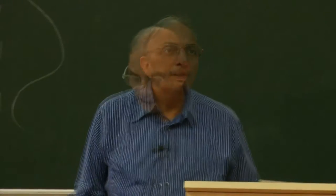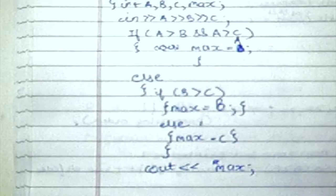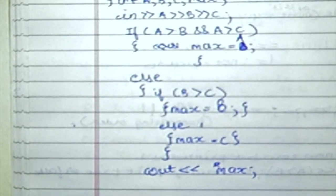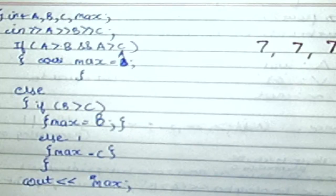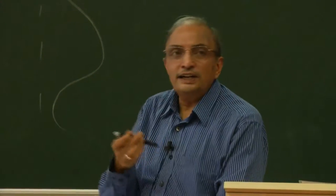What is the input for which this program will not work? Let us take the suggestion: all are equal, say 7, 7, 7. Now if all are equal, does it matter which one gets assigned to max? They are all the same value. Is one 7 better than the second 7? They are all 7, so it doesn't matter. If a greater than b and a greater than c — this condition is false when all are equal. So we come to the else part. If b greater than c is also false, max equals c. So max gets assigned c, which is 7. Correct.